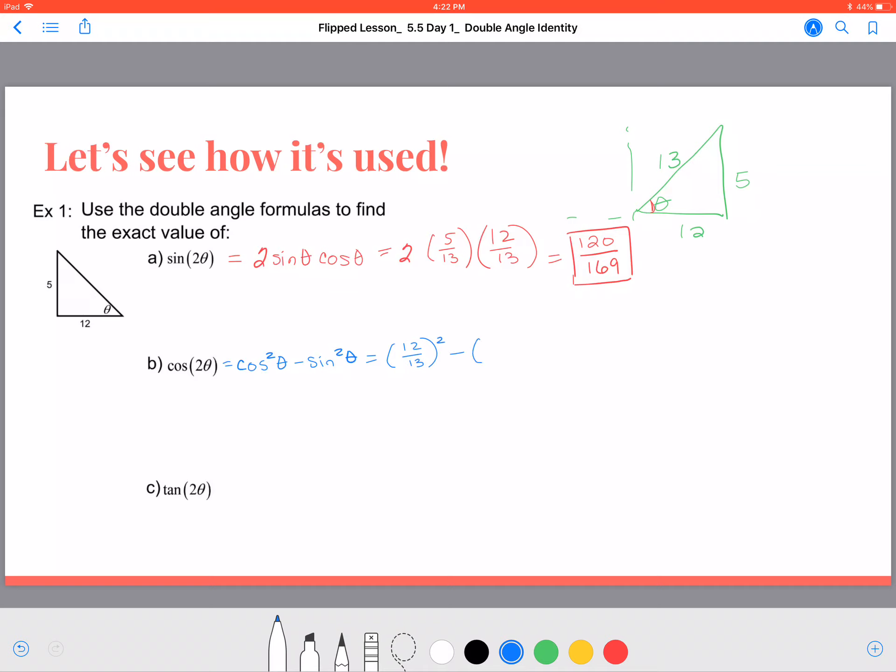And the sine is equal to 5 over 13, we found that in our example above, but I can also look back at this triangle at this angle. When I square those values, I get 144 over 169 minus 25 over 169, which equals 119 over 169. That's our final answer.